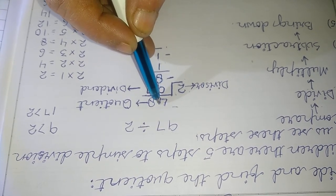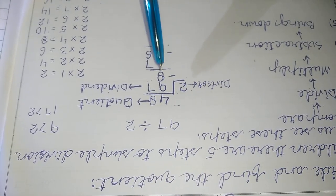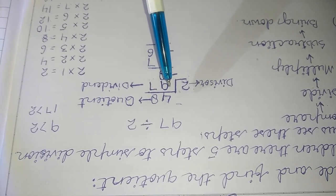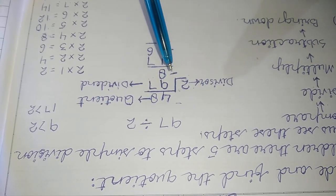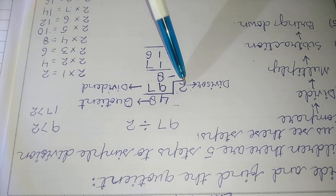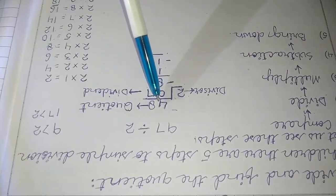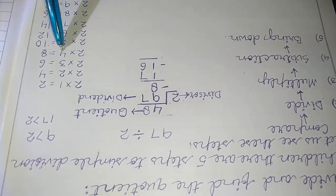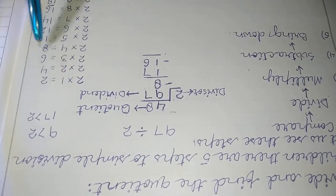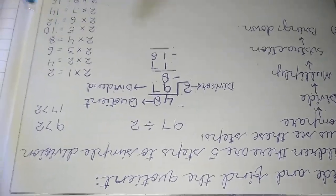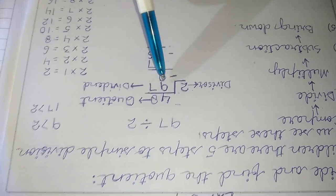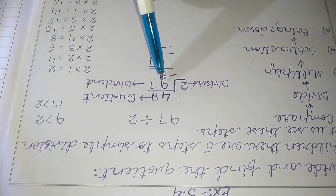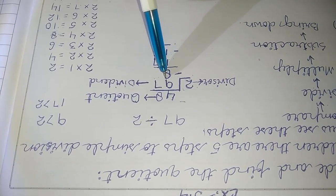Step 3 is to multiply. We multiply 4 by 2: 4 times 2 equals 8. We write the number 8 in the tens column, under the 9.